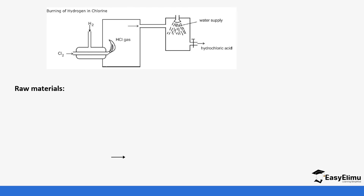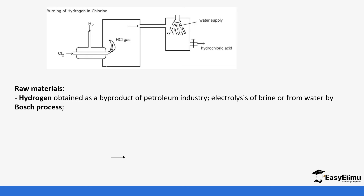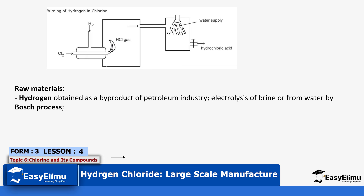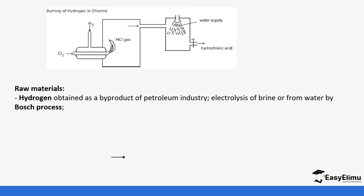Some of the raw materials for this reaction include hydrogen. Hydrogen can be obtained as a product of the petroleum industry. It can also be obtained from the electrolysis of brine or from the electrolysis of water. So there are different ways we can get hydrogen.